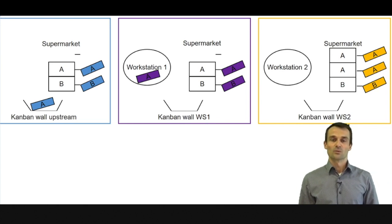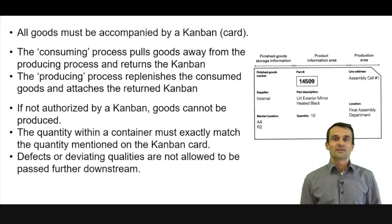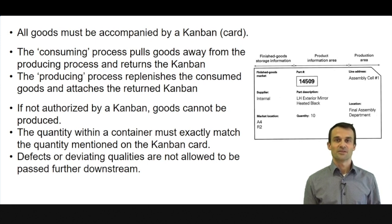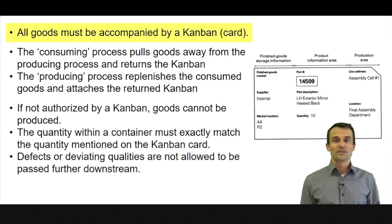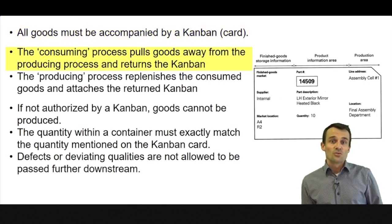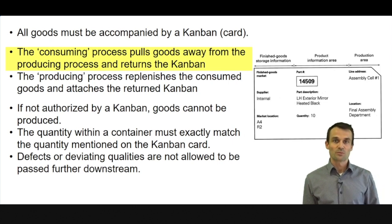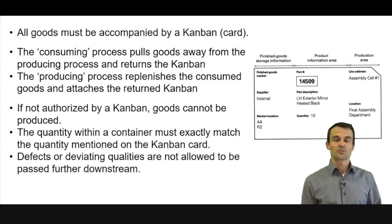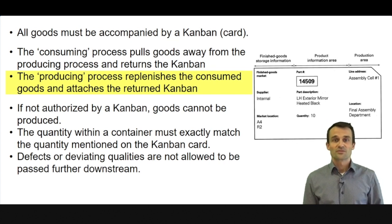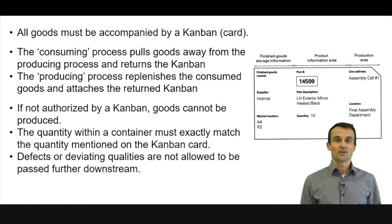So this is how Kanban works. It can be summarized with the Kanban rule as follows. That's the key rule for all card-based shop floor control systems: every item has to have a card attached to it. Then the consuming process takes goods from the supermarket, and doing so releases the Kanban card and puts it on the Kanban wall. Then the producing process observes its Kanban wall and produces items for which it has a card on its wall.